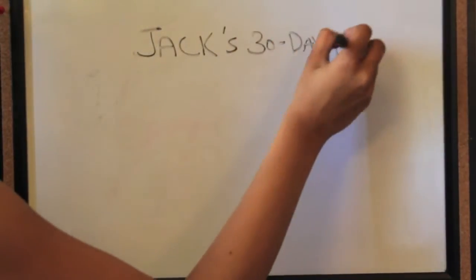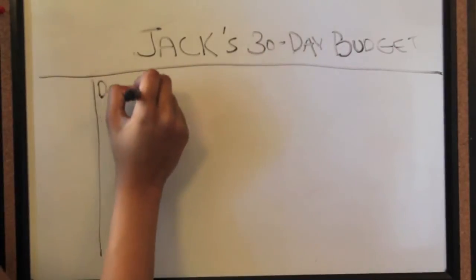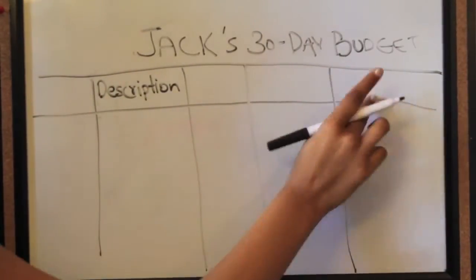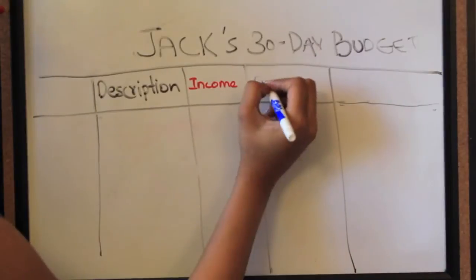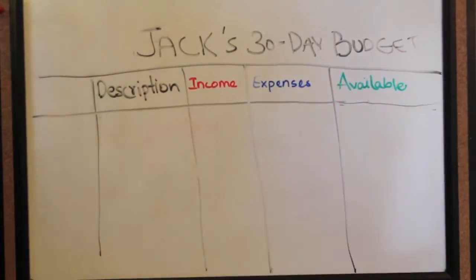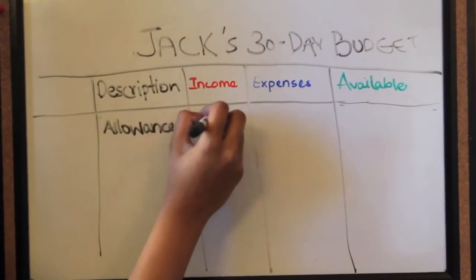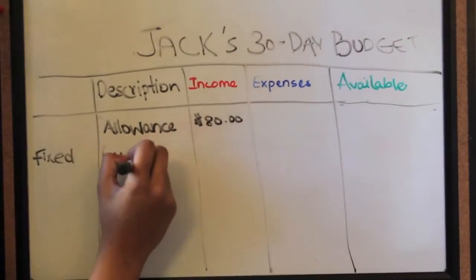Okay, so to tie everything together, let's give you an example of Jack's 30-day budget. Budgeting is basically balancing out your income with your expenses. The first thing you do is put down your allowance, or your income. So Jack has an allowance of $80.